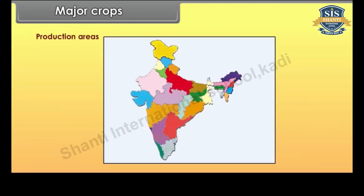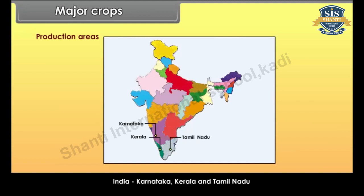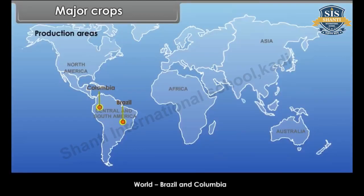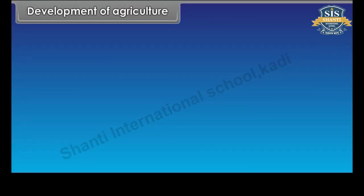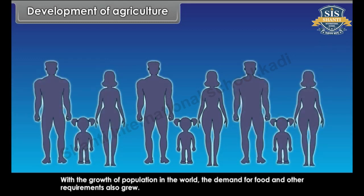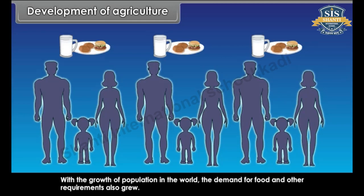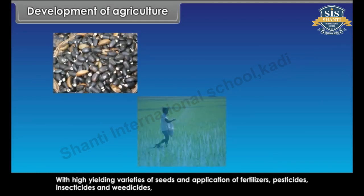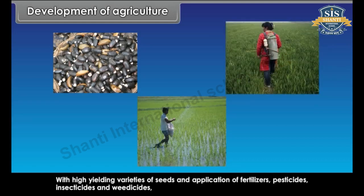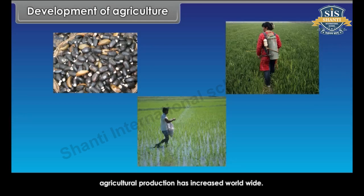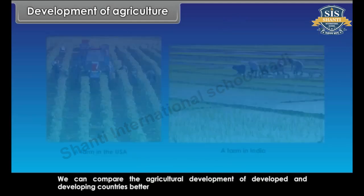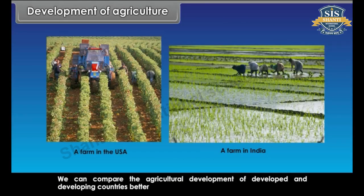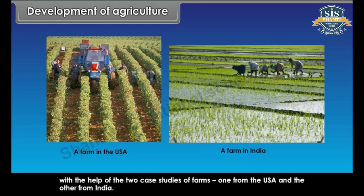Production areas of coffee in India include Karnataka, Kerala and Tamil Nadu. World producers are Brazil and Colombia. With the growth of population in the world, the demand for food and other requirements also grew. With high-yielding varieties of seeds and application of fertilizers, pesticides, insecticides and weedicides, agricultural production has increased worldwide. We can compare agricultural development of developed and developing countries better with two case studies of farms — one from the USA and the other from India.